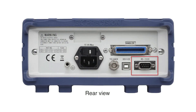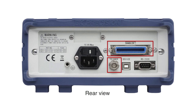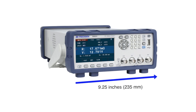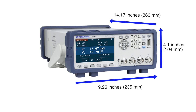Standard RS-232, USB, USB-TMC, and virtual comm interfaces are included. The handler interface and external BNC trigger input are useful for production automation. Both models are 9.25 inches by 4.1 inches by 14.17 inches and weigh 7.9 pounds.